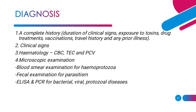Coming on to diagnosis. A complete history of the duration of clinical signs, exposure to toxins, any drug treatments, vaccinations, travel history, and any prior illness are of great value. Clinical signs such as pale mucous membrane, muscular weakness, dullness, tachycardia, fatigue, and weak pulse are all helpful in determining whether the animal is anemic. Hematology like complete blood count, total erythrocyte count, and pack cell volume is of great value. Microscopic examination including blood smear examination for hemoprotozoa, fecal examination for parasitism, and ELISA and PCR for bacterial, viral, and protozoal disease help in knowing the actual cause of anemia.